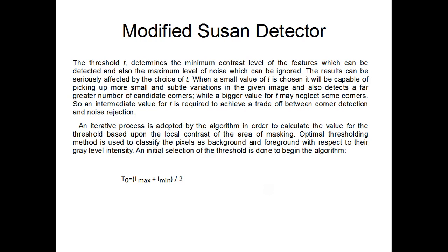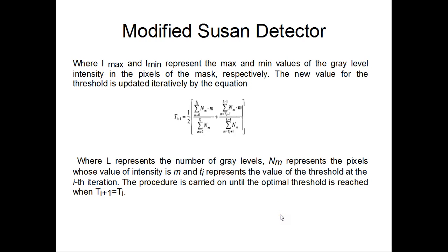An iterative process is adopted by the algorithm in order to calculate the value for the threshold based upon the local contrast of the area of masking. Optimal thresholding method is used to classify the pixels as background and foreground with respect to the gray level intensity. An initial selection of the threshold is done to begin the algorithm. The initial threshold is given by the equation (I_max + I_min)/2, where I_max and I_min represent the max and min values of gray level intensity in the pixels of the mask respectively.